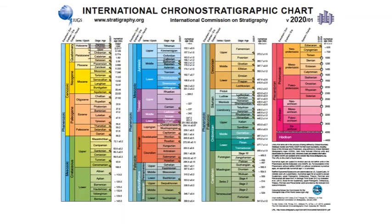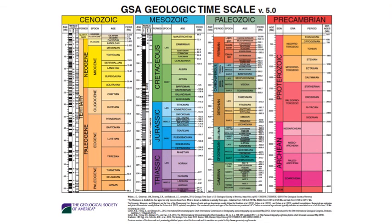The GSA timescale has four columns. The editors for that chart are Doug Walker, who is at the University of Kansas and was set to be president of the GSA.